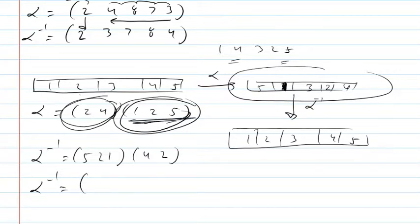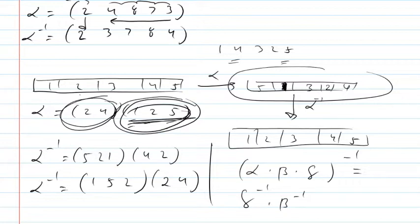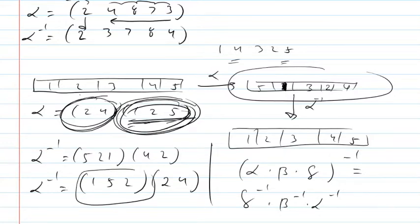I like to write this as (1, 5, 2) — still writing the smallest number first — and I would write the 2-cycle as (2, 4). So in general, if I have several moves and I want to take the inverse, I end up doing the inverses of the moves in reverse order. My initial thing was (2, 4) followed by (1, 2, 5), and the inverse was (1, 5, 2) — which is the inverse of (1, 2, 5) — followed by (2, 4), which is the inverse of (2, 4).